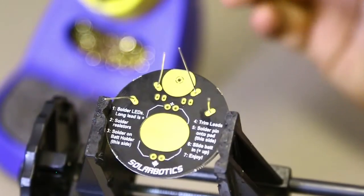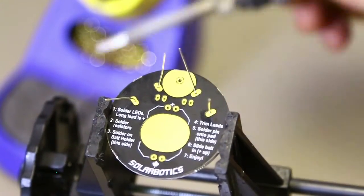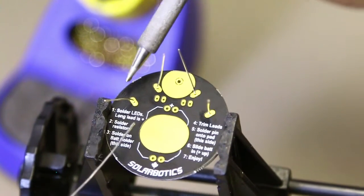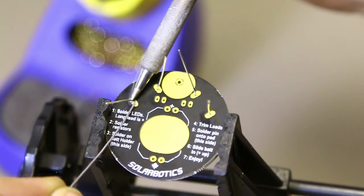Whenever we solder these components, you must remember, wipe your tip off on either a wet sponge or on the brass sponge first. Then, tin your tip and add the solder to the component by soldering from the opposite side of the soldering iron.